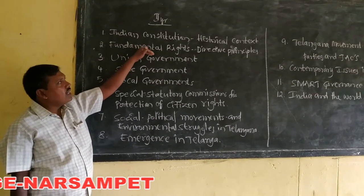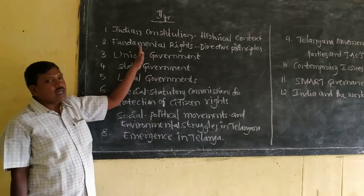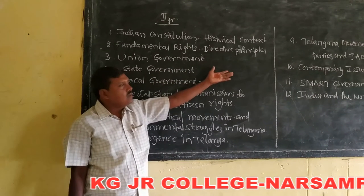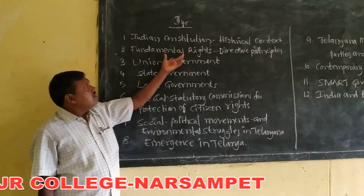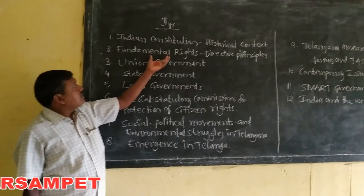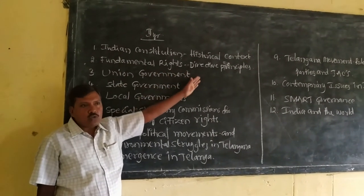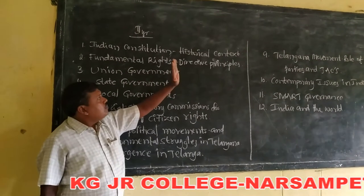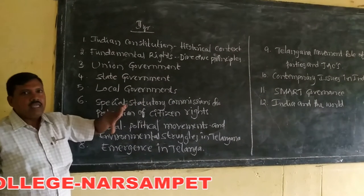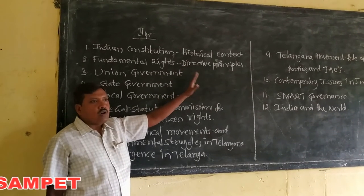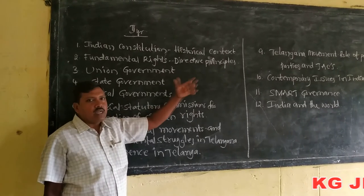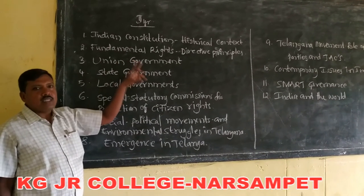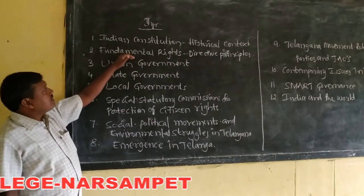The second one is Fundamental Rights and Directive Principles. What are the features of the fundamental rights? How many kinds of rights are there? What are the principles of state policy? We have six fundamental rights. Directive principles are not justiciable — the government provides and implements the principles, but we cannot get justice in court if directive principles are not implemented. However, if fundamental rights are violated, we will get justice from the courts.